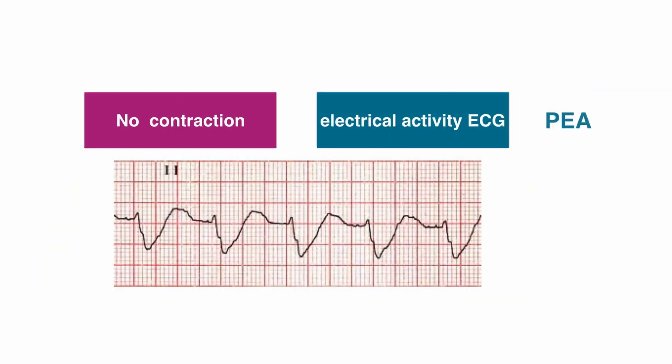In true PEA, which is defined as the clinical absence of ventricular contraction despite the presence of electrical activity, you will find some form of rhythm but no effective contraction.